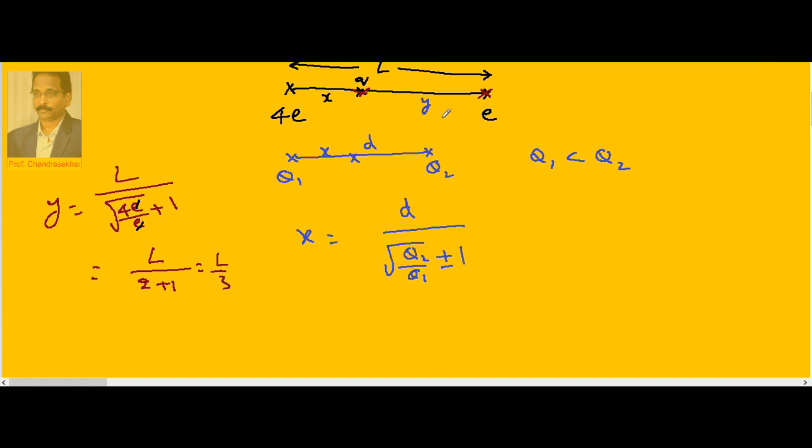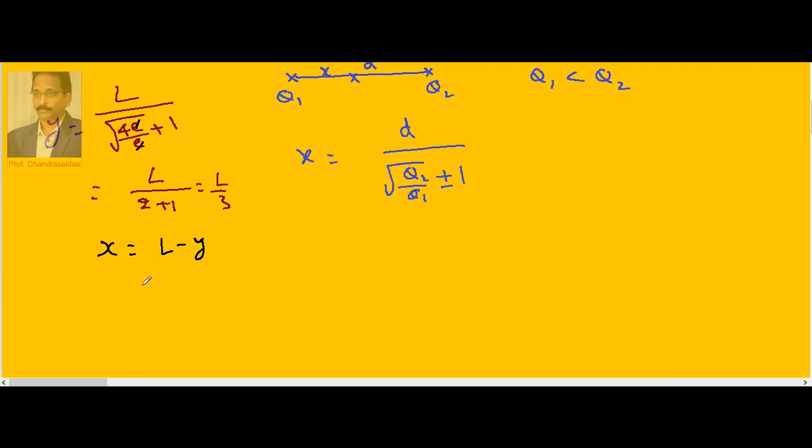So from E, the distance is L by 3, but the question asks for the distance from 4E, that is, we are interested in x. From the figure, x is nothing but L minus y. Here y is L by 3, so x equals L minus L by 3.